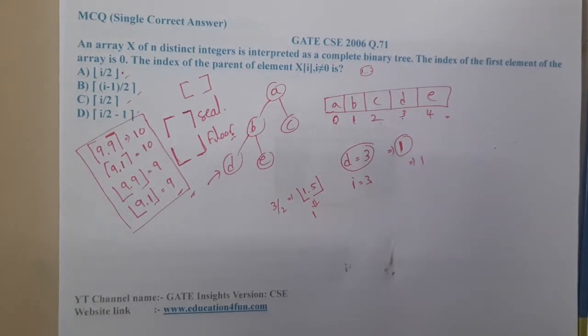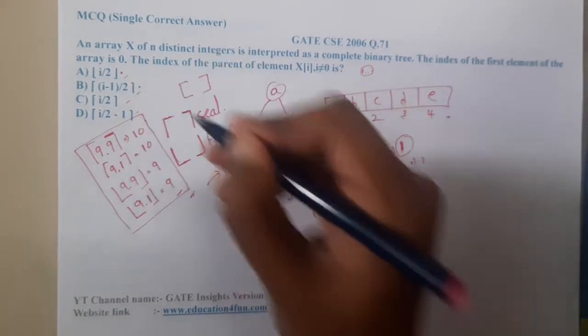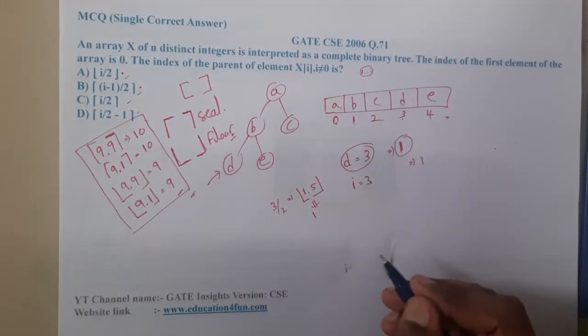Moving on to option 2, that is (3 minus 1) that is 2 by 2, that is 1. So option 2 is also in the race.